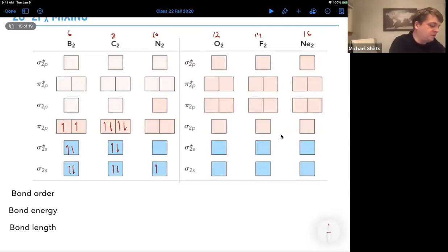Next, with nitrogen, one, two, three, four, five, six, seven, eight, nine, 10. And then, yeah, so we're just filling up with oxygen. Now we've got 12. Actually, let's go back and look at the bond order.